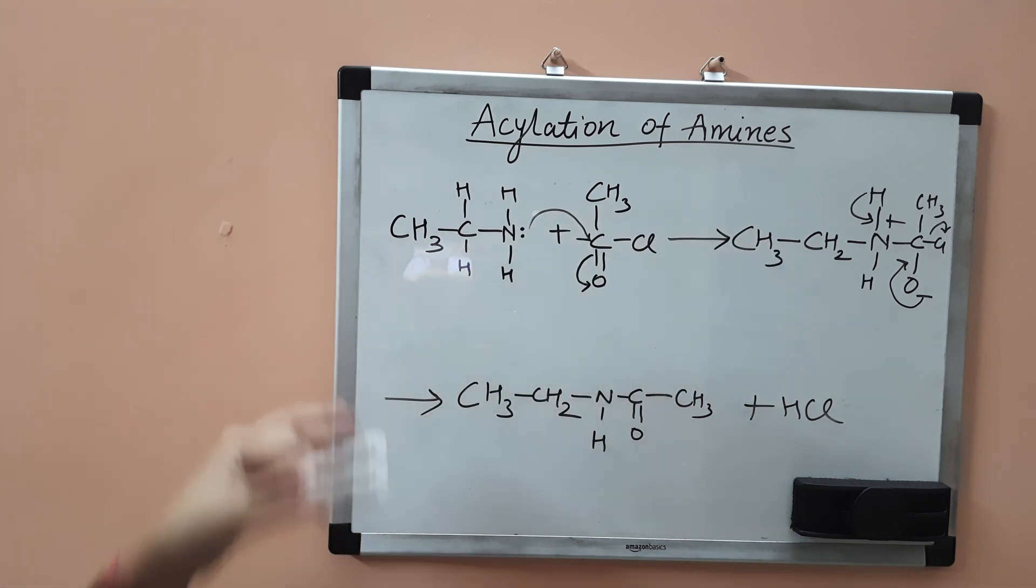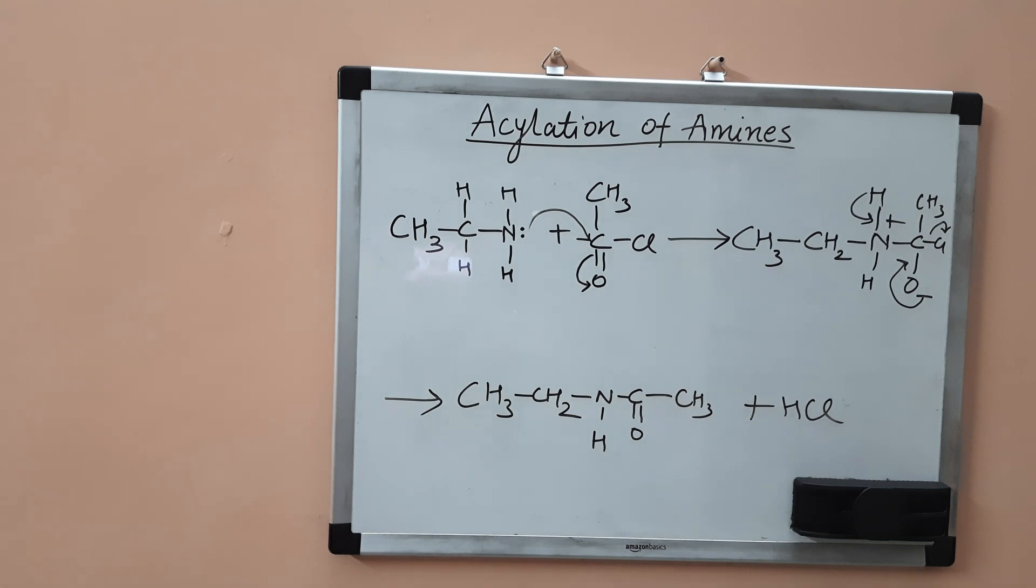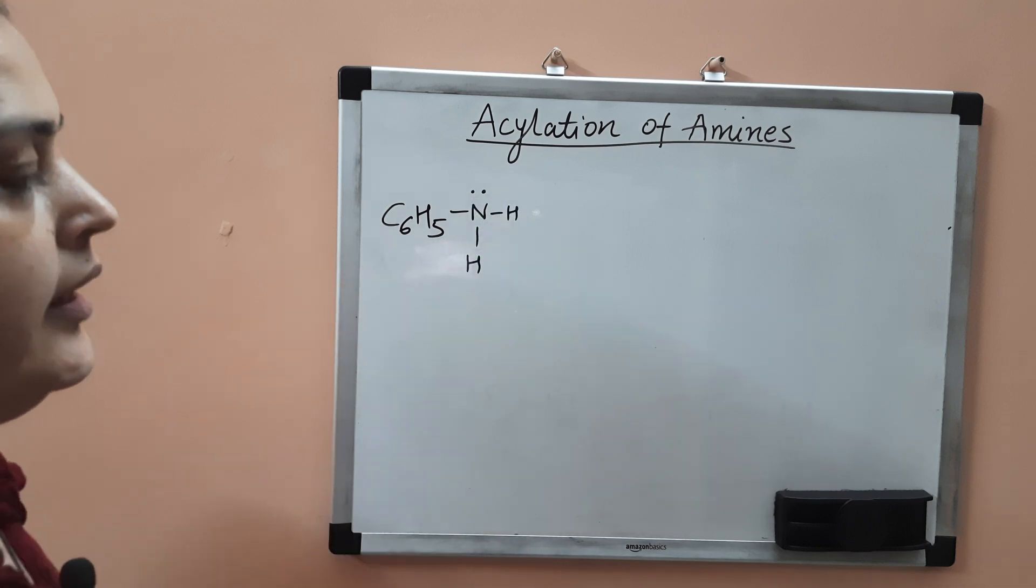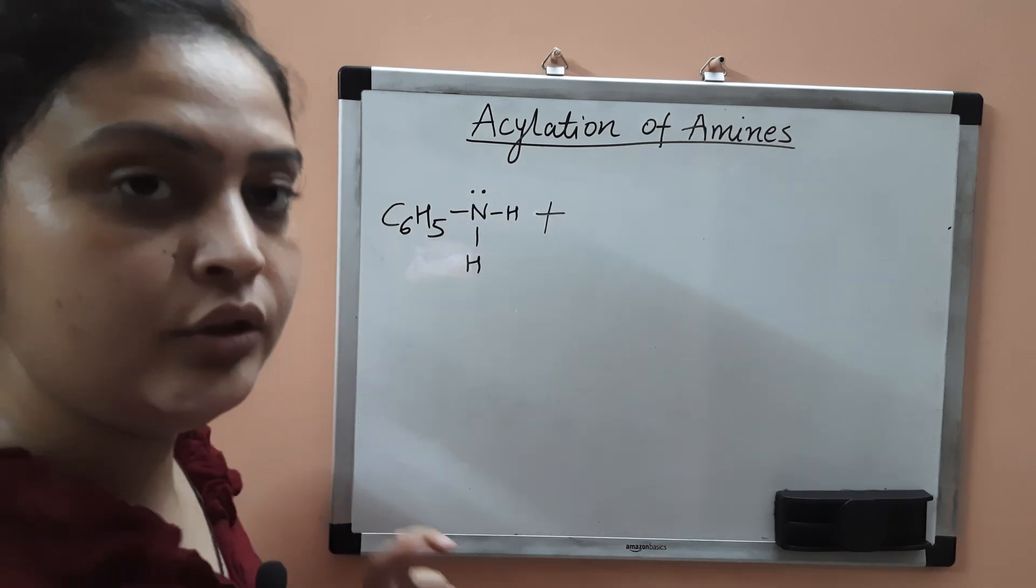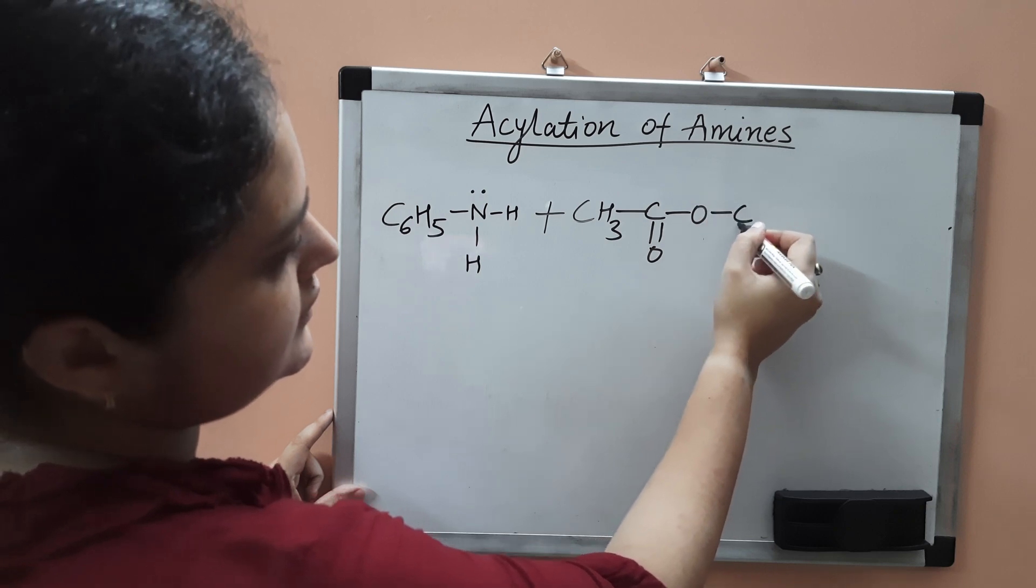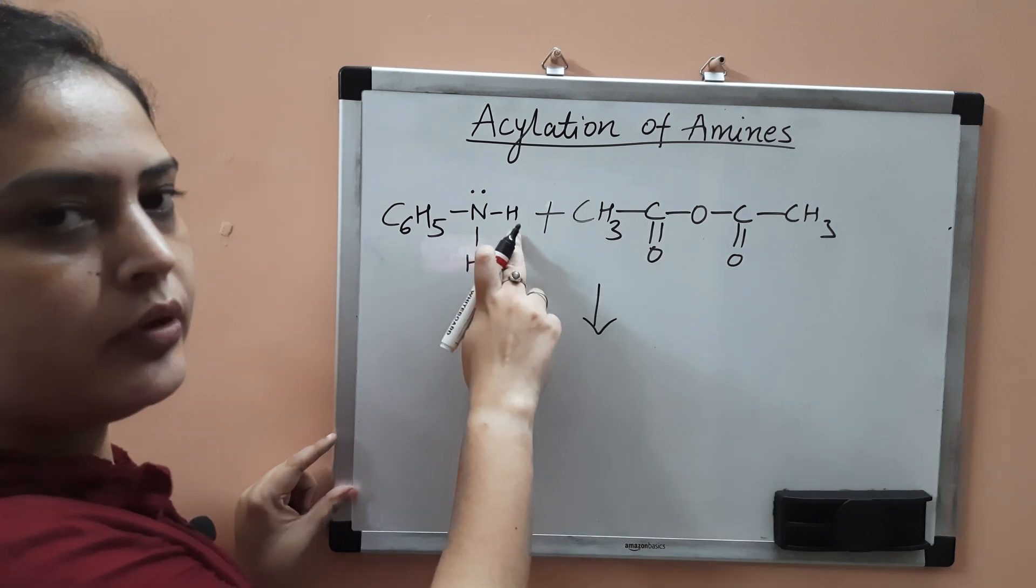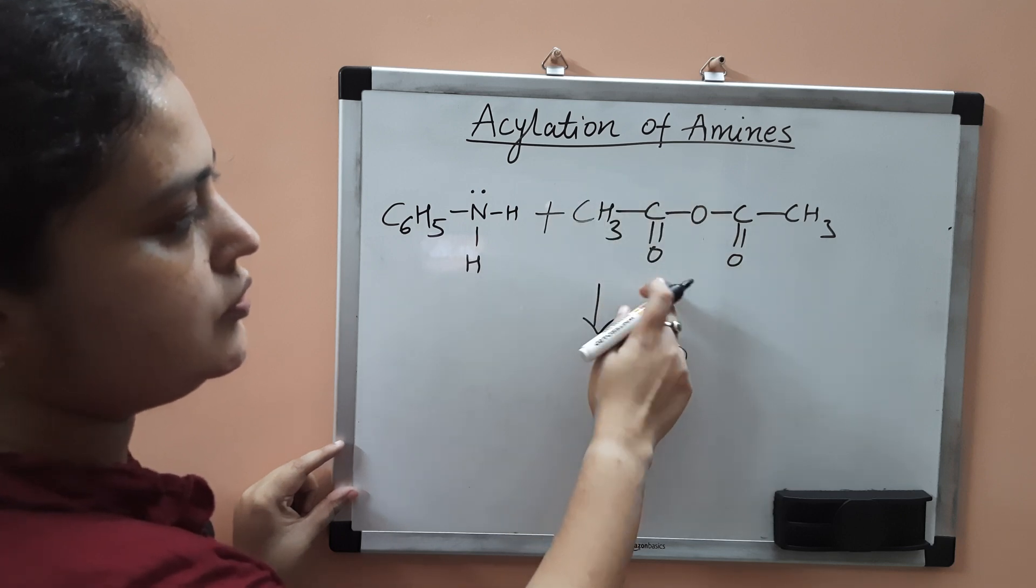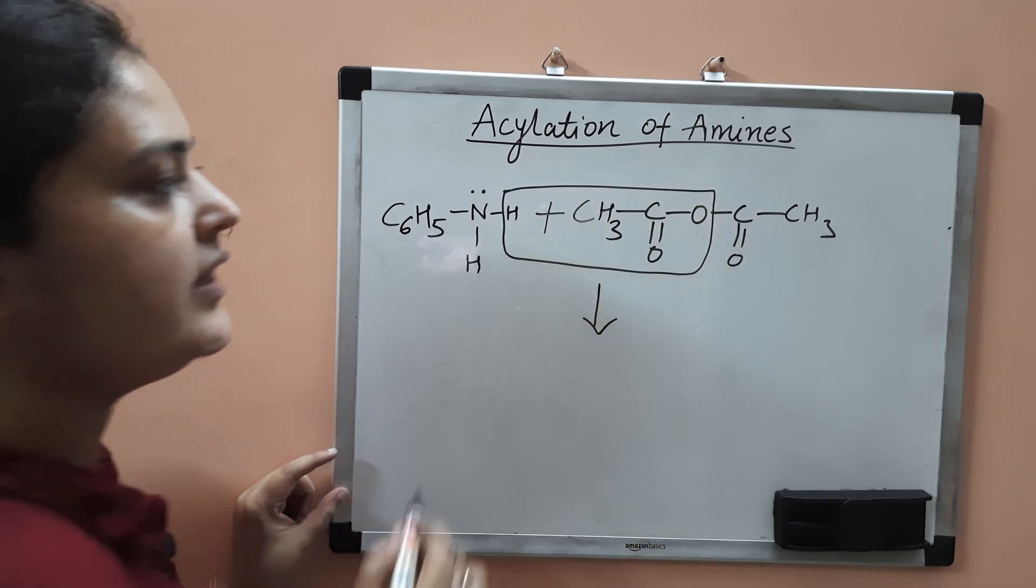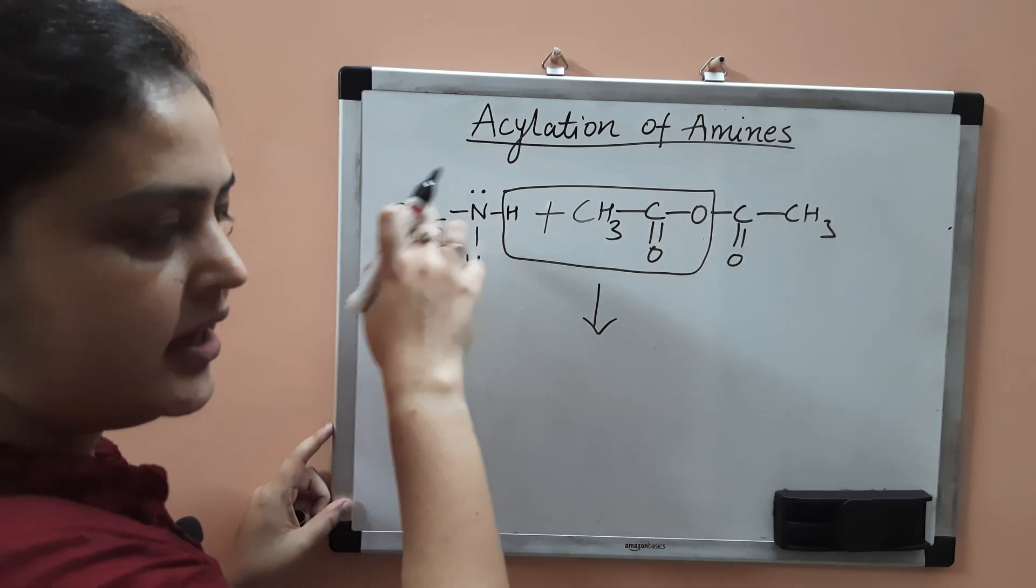Now if you react your amine with anhydride, what will be the product? This is benzene amine C6H5NH2. If you add ethanoic anhydride CH3C double bond O, oxygen, then C double bond O and CH3, the hydrogen will be removed from amine and CH3CO will be removed as carboxylic acid. You will get the acyl group attached to the amine.